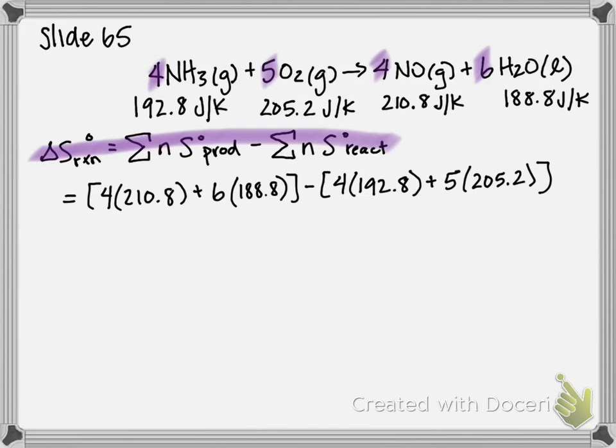So our products, if we multiply and add all those together, we get 1976.0 joules per Kelvin. And on the reactants, we get 1797.2 joules per Kelvin.